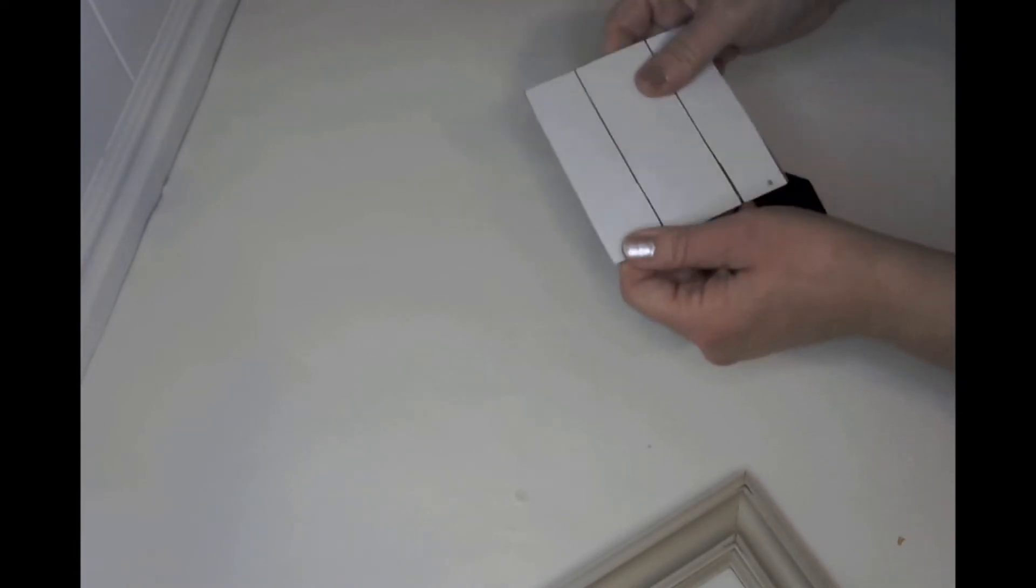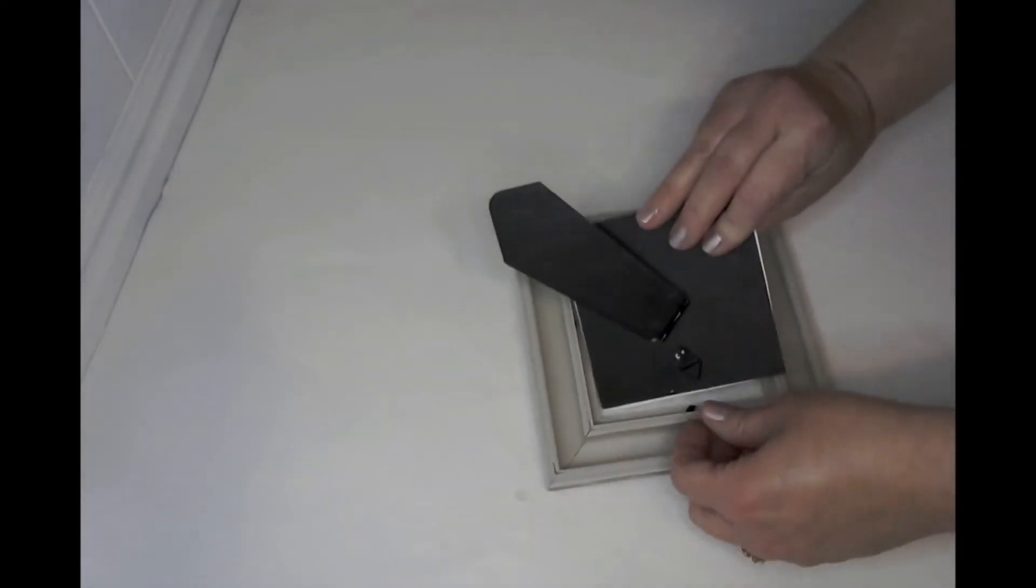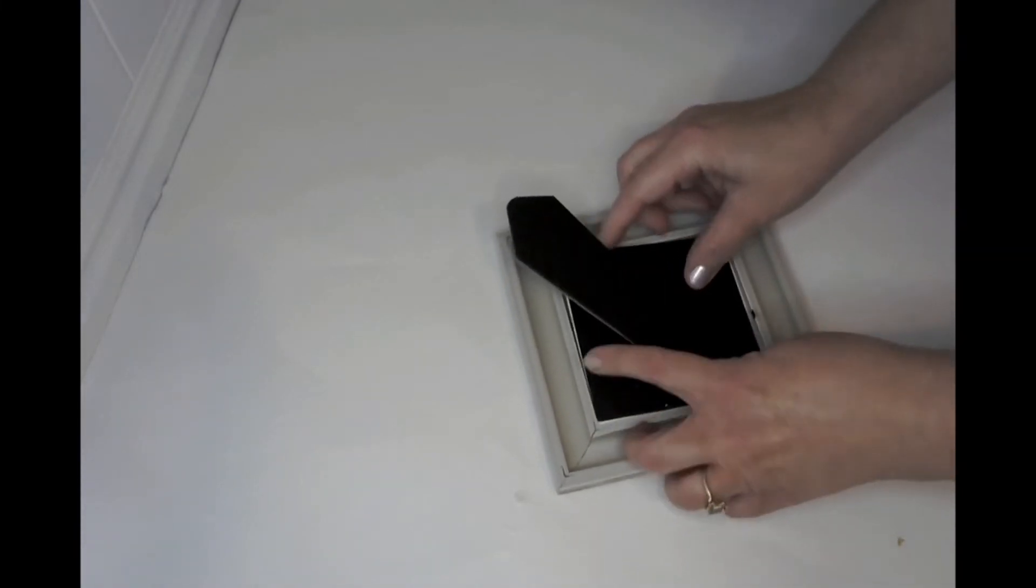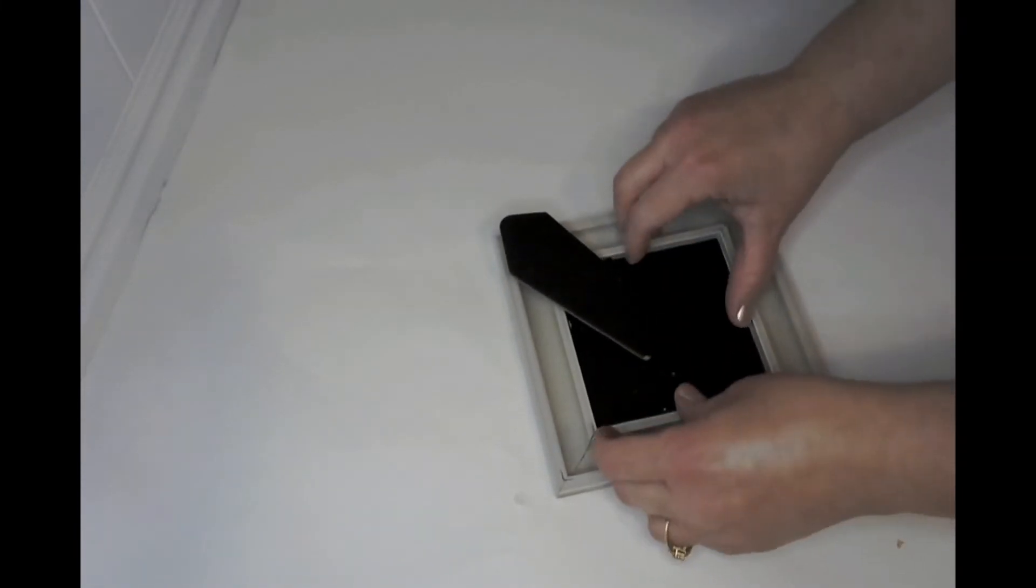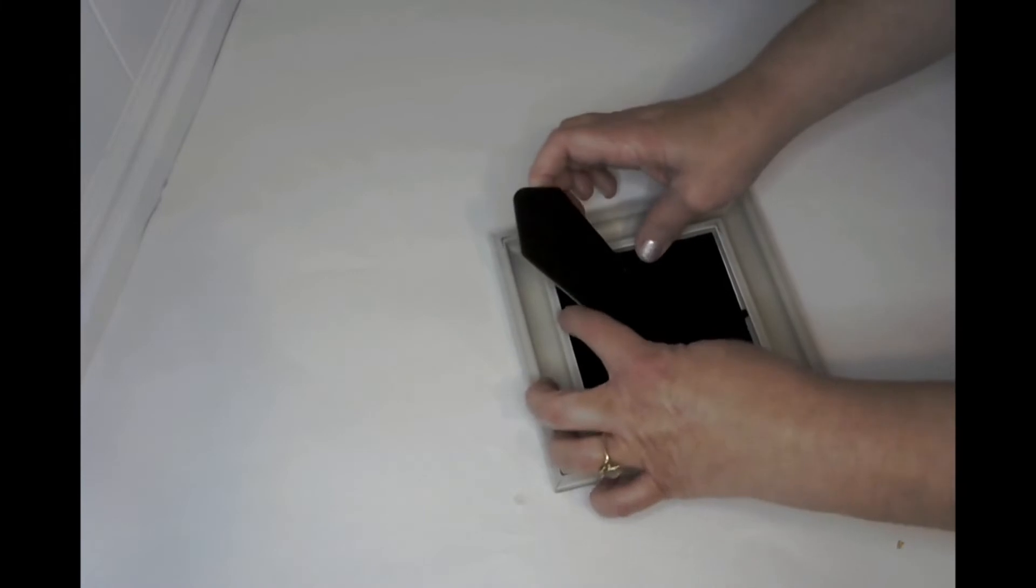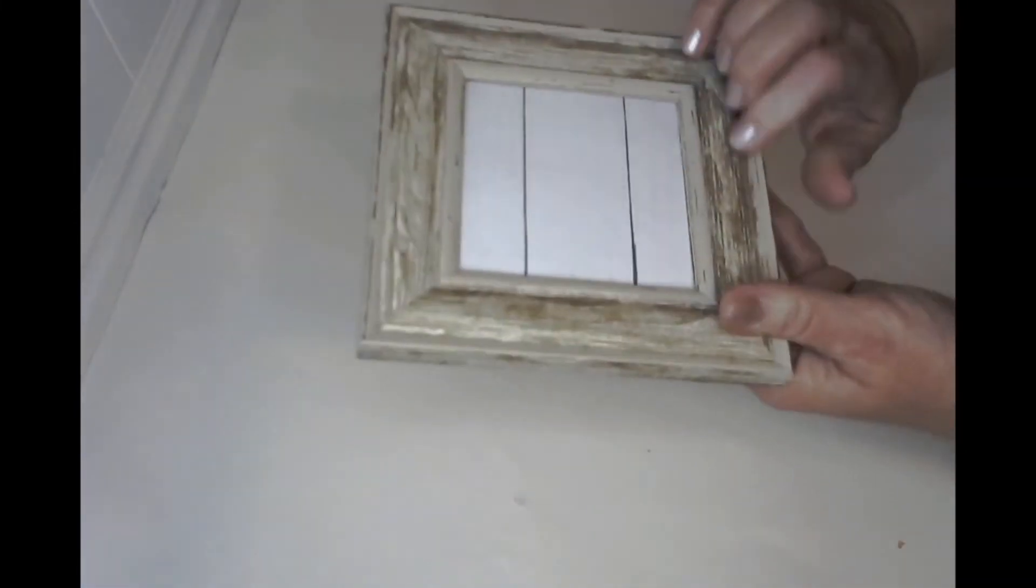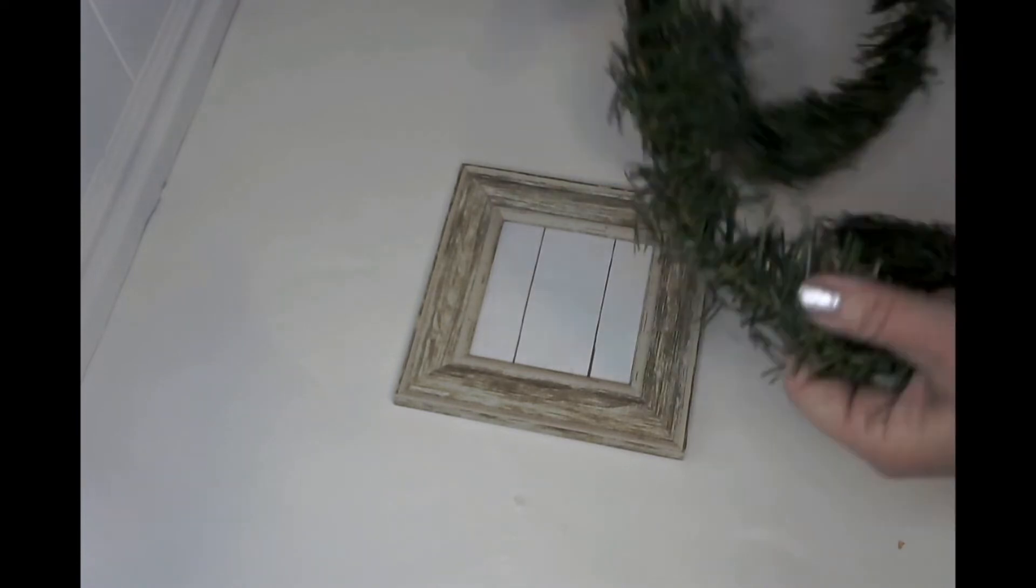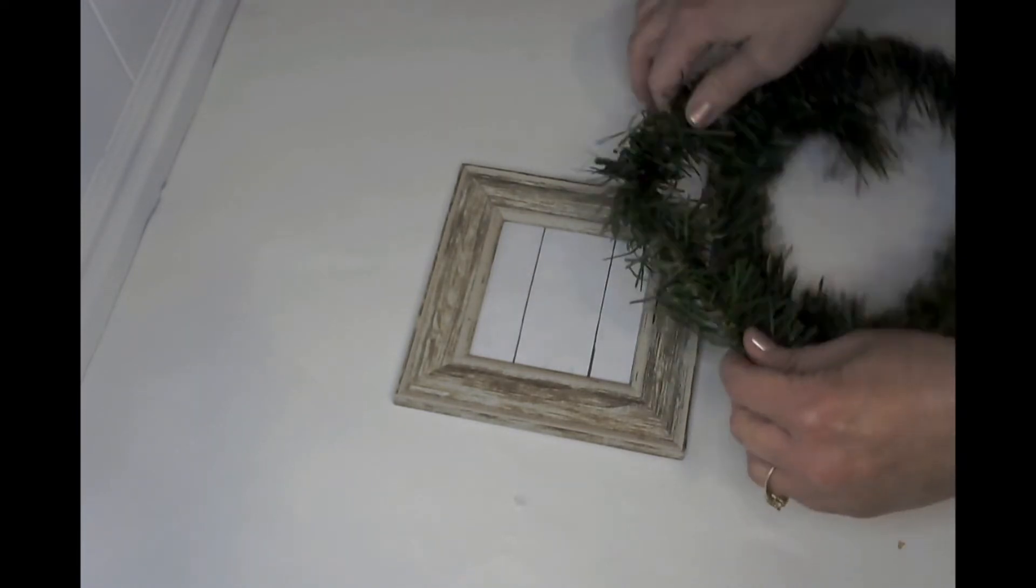If you want to have it a little bit more sturdy, you can always put in an additional piece of cardboard. Or like I said, you can also just glue it directly to the glass. And then we're going to take some of our greenery here.